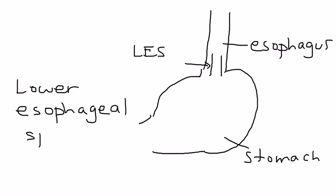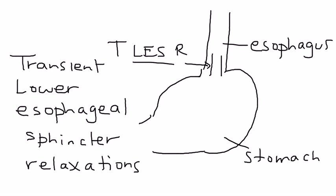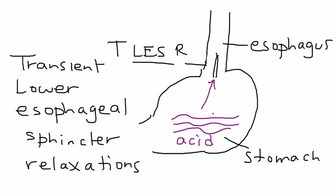The LES plays a very important role in GERD. Periodically you have something called TLESR — transient, or temporary, lower esophageal sphincter relaxations. The lower esophageal sphincter muscles, when closed, prevent stomach contents from going back up. When GERD occurs, these relaxations happen and acid goes back into the esophagus.